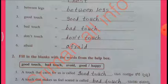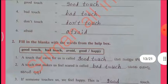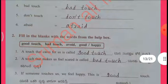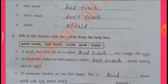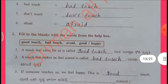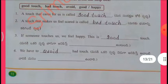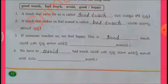Fill in the blanks. A touch that cares for us is called Good touch. A touch that makes us feel scared is called Bad touch. If someone touches us and we feel happy, this is a Good touch. We have to avoid Bad touch.